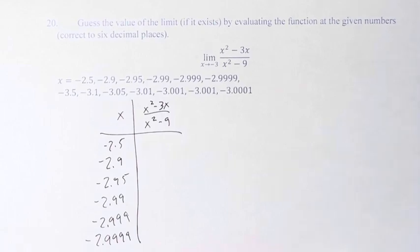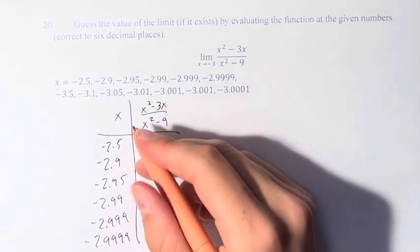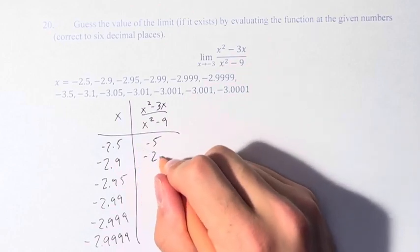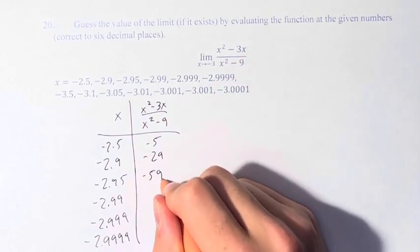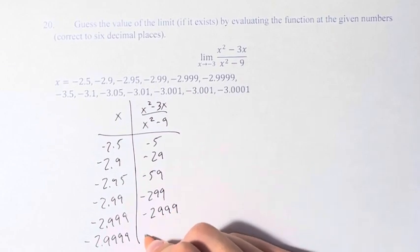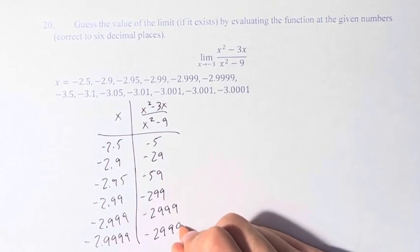So evaluating these, if you plug these into your calculator: negative 5, negative 29, negative 59, negative 2.99, negative 2.999, and negative 2.9999.